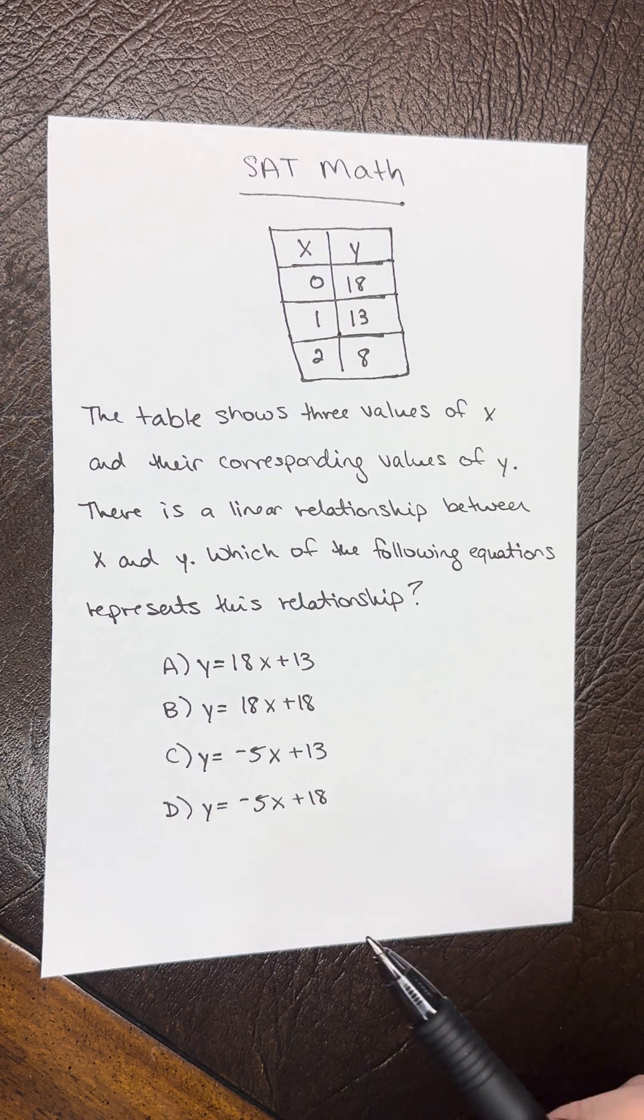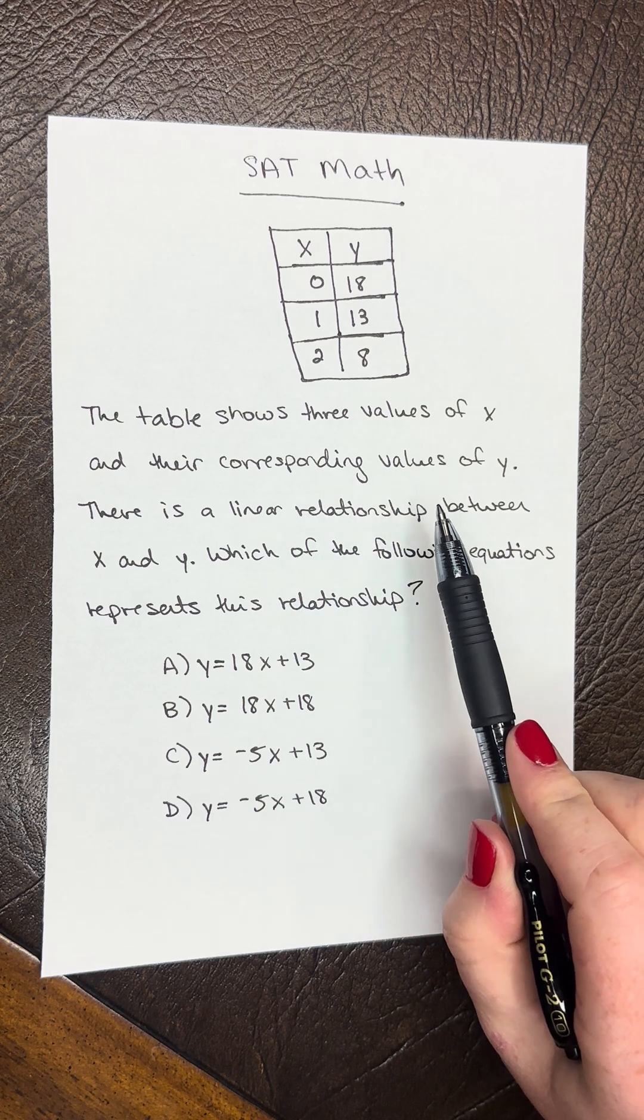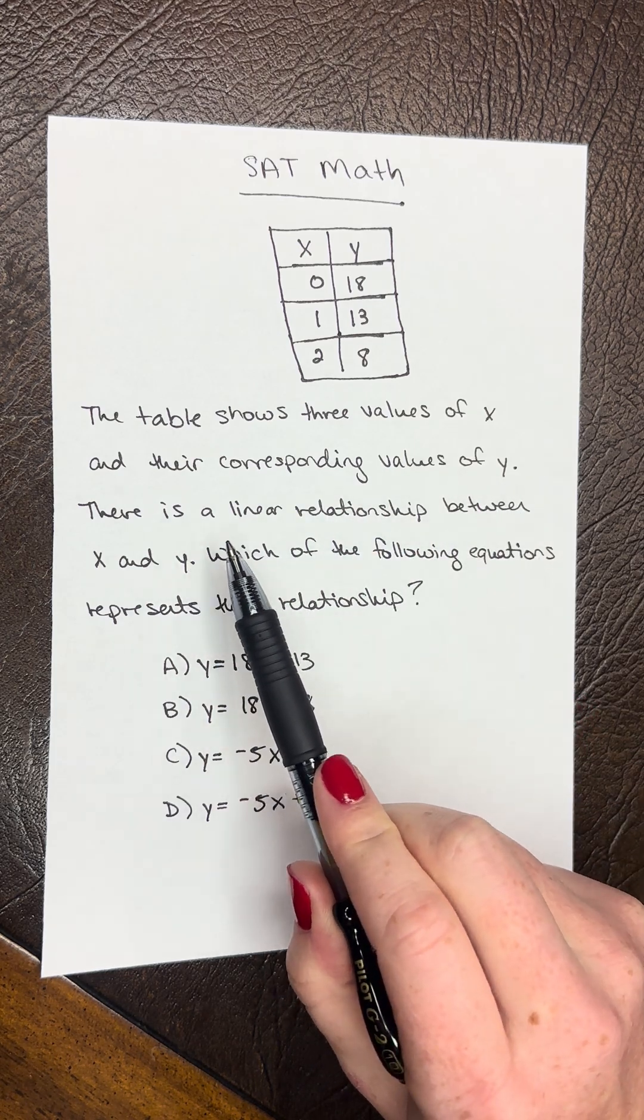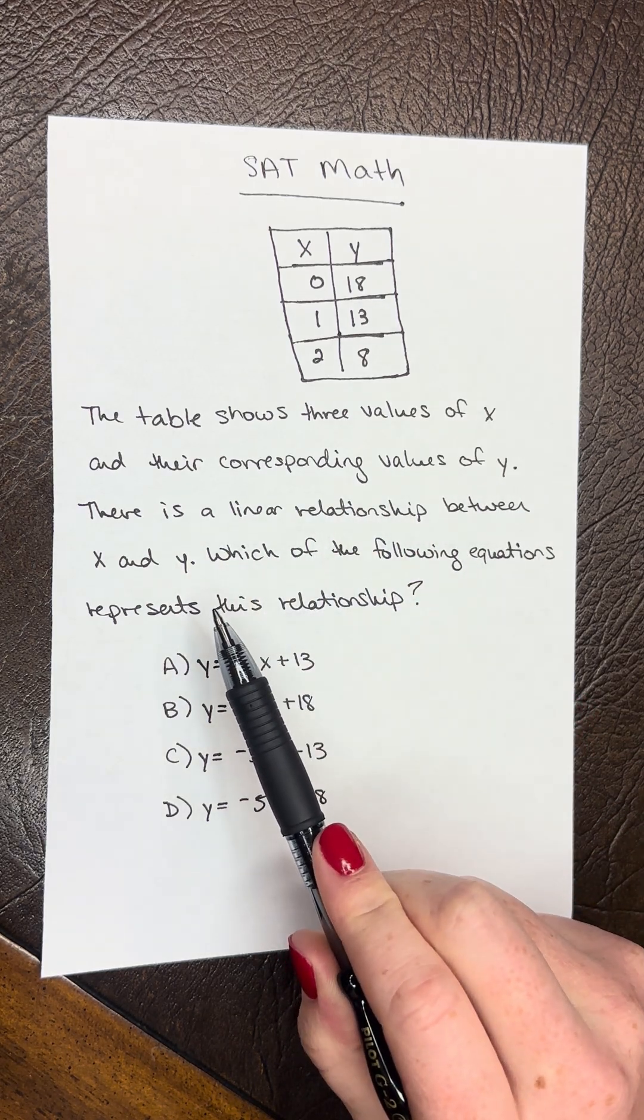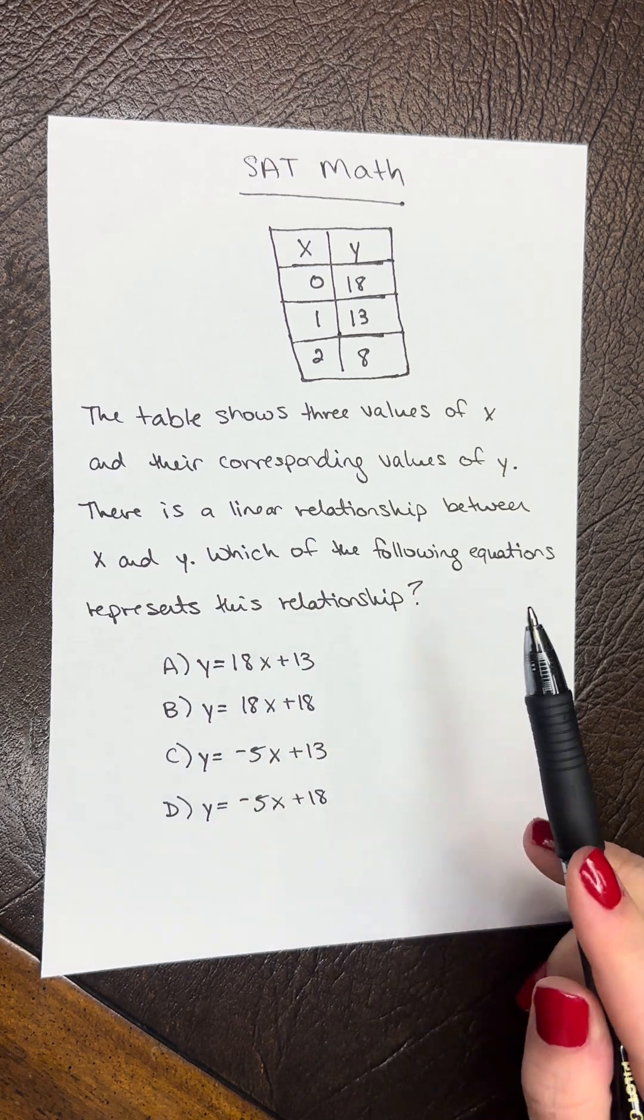SAT math question of the day. The table shows three values of x and their corresponding values of y. There is a linear relationship between x and y. Which of the following equations represents this relationship?